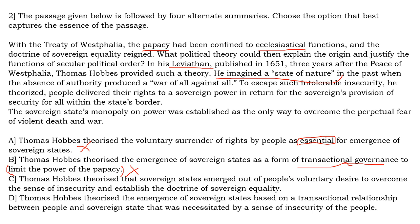Option C: Hobbes theorized that sovereign states emerged out of people's voluntary desire to overcome the sense of insecurity and establish the doctrine of sovereign equality. The first part is correct, but 'establish the doctrine of sovereign equality' is wrong. The doctrine of sovereign equality was already established with the Treaty of Westphalia itself — it was not established as a result of the transactional governance described by Hobbes. So this is also an incorrect statement.